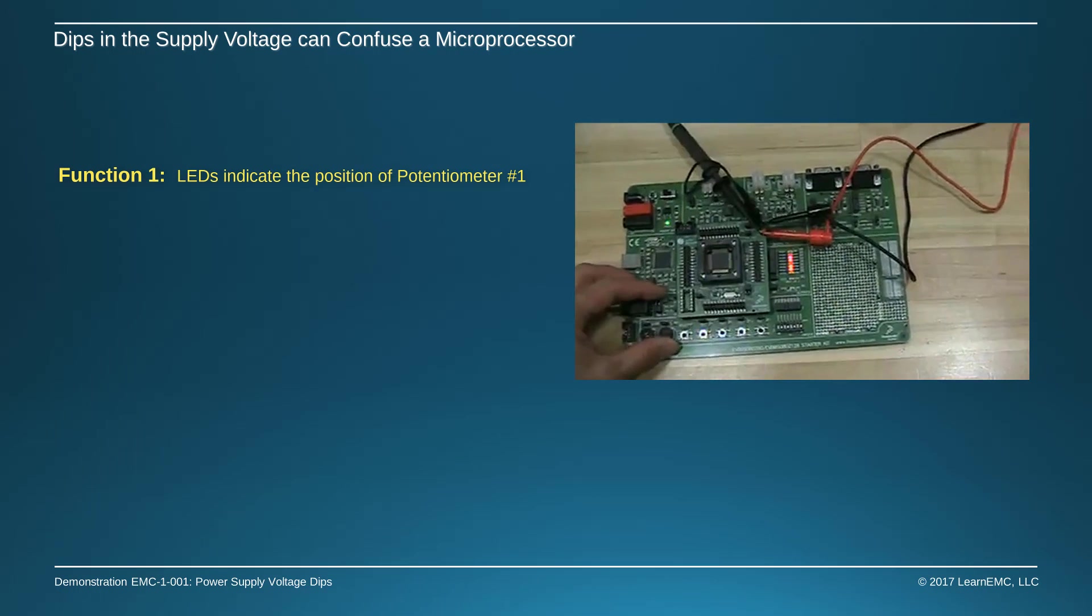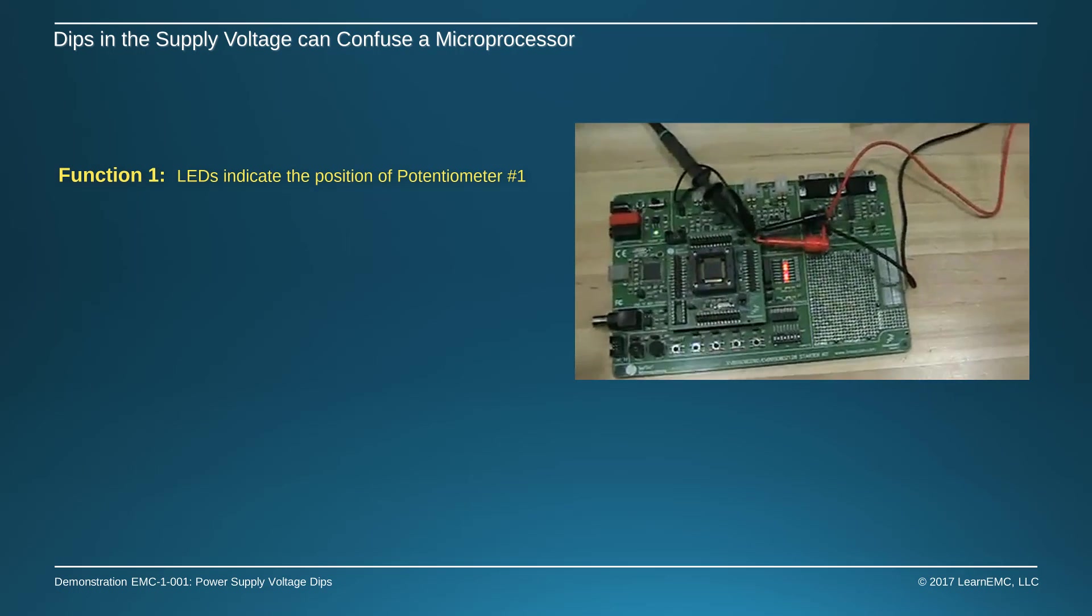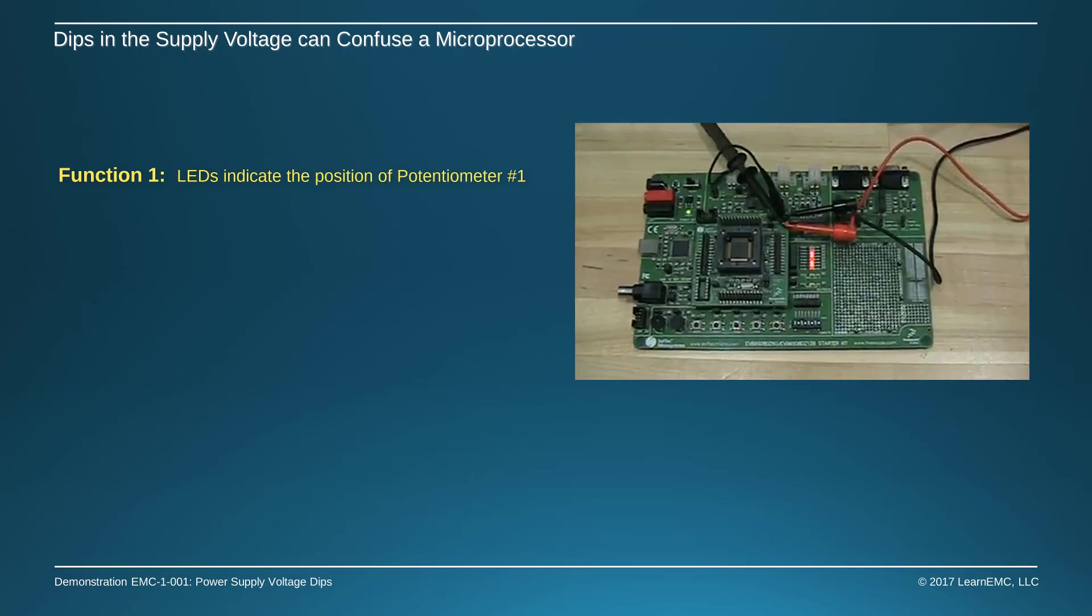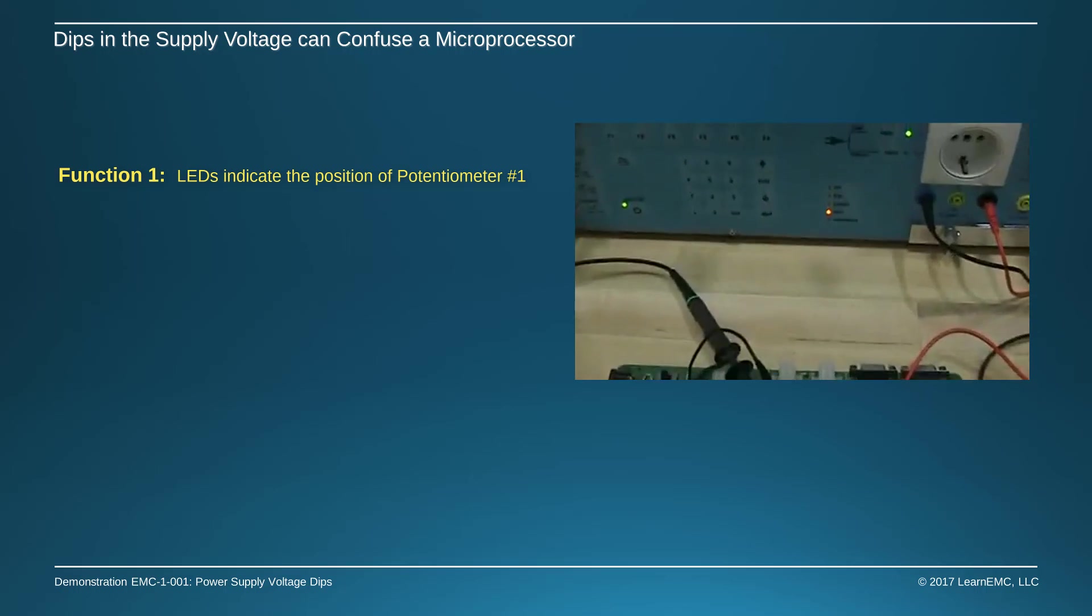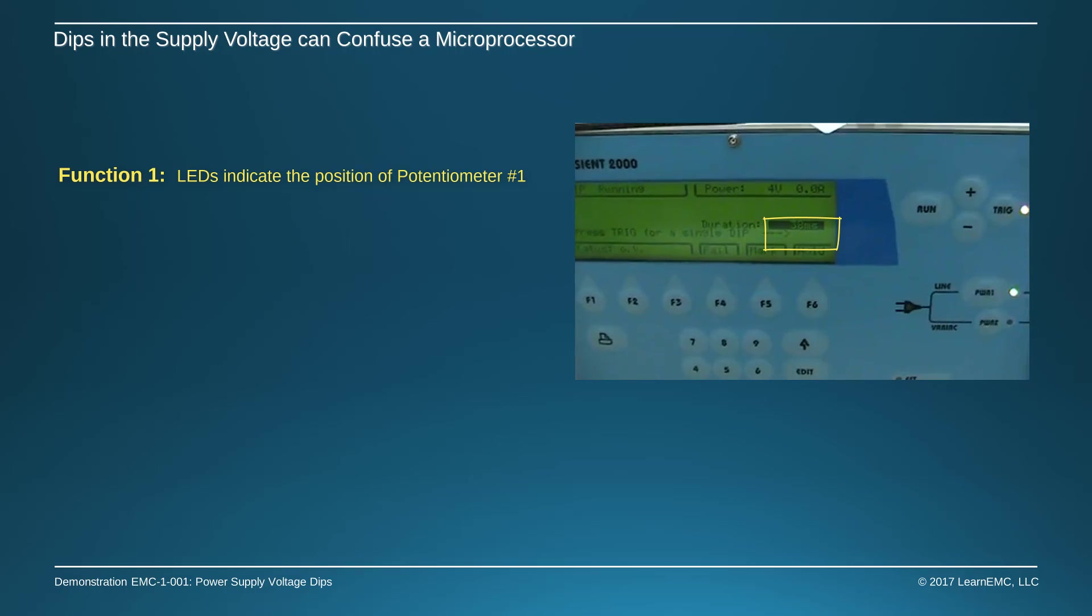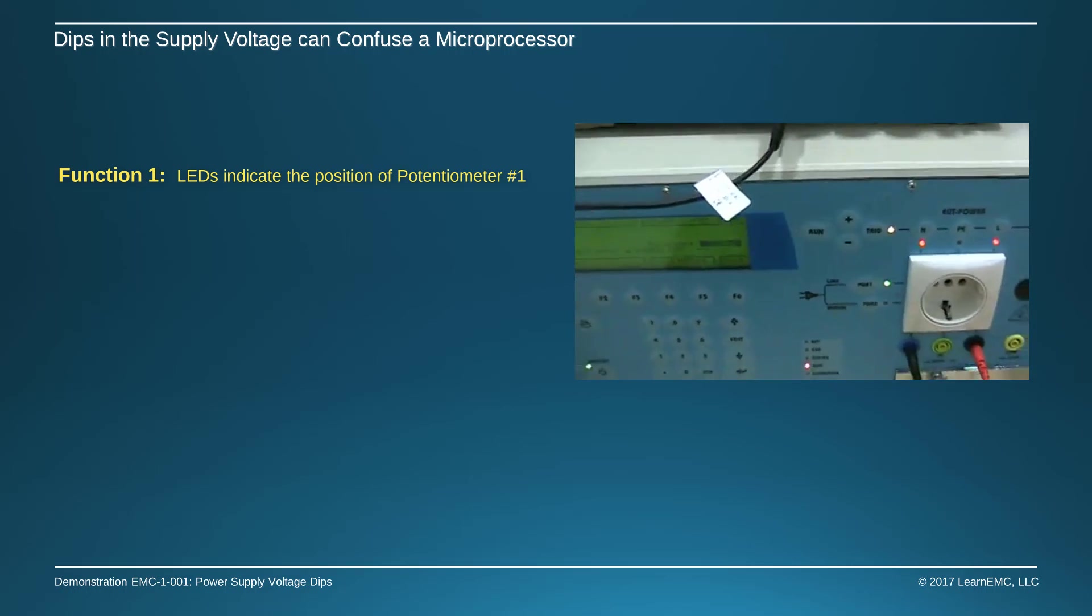Let's see what happens when we drop the voltage for a time long enough to deplete the stored charge in the decoupling capacitors, but too short to reset the processor. In this case, we'll set the transient test system to drop the voltage for 38 milliseconds.